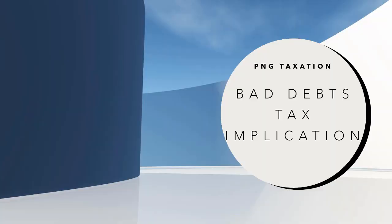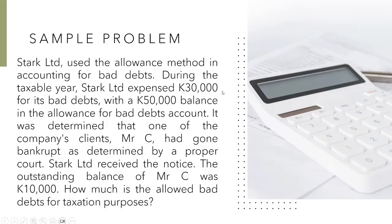Welcome to the recorded lecture on bad debts tax implication under the PNG taxation unit. We have a sample problem here. Stark Limited used the allowance method in accounting for bad debts. During the taxable year, Stark Limited expends 30,000 Kina for its bad debts with a 50,000 Kina balance in the allowance for bad debts account.